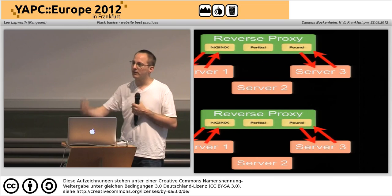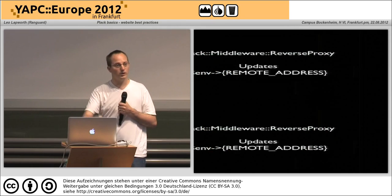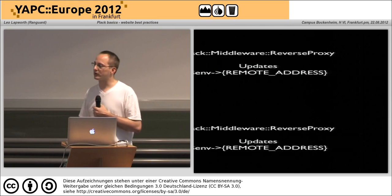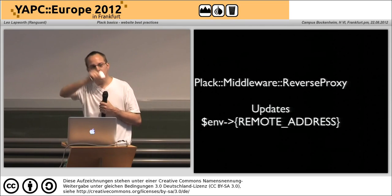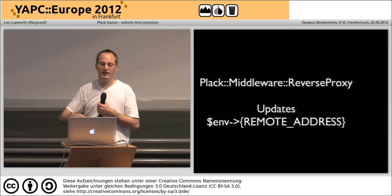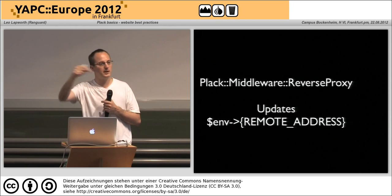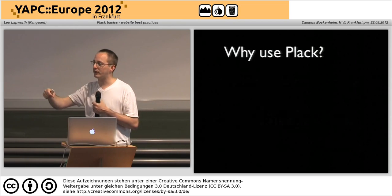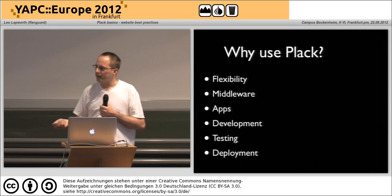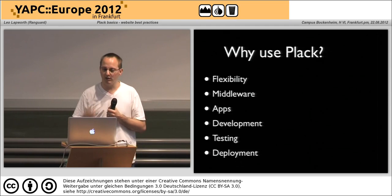That also makes maintenance easy — if you're doing an upgrade you can do it one machine at a time without any downtime. The reason I mention all of this is that if you are using a reverse proxy you need to look at using Plack::Middleware::ReverseProxy. What this does is convert the environment so that your code sees the real remote address — the user's IP address — rather than your proxy layer's IP address.